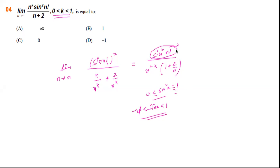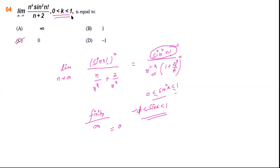We have some finite quantity in the numerator, and as n tends to infinity, the denominator n^(1−k) goes to infinity since k is between 0 and 1. So we have a finite quantity divided by an infinite quantity, which is not indeterminate — this is simply equal to 0. This is the correct answer, and we have made use of the condition that k lies between 0 and 1; otherwise the result would be different.